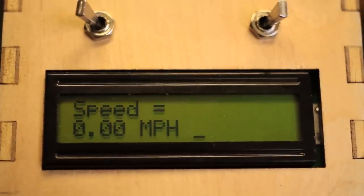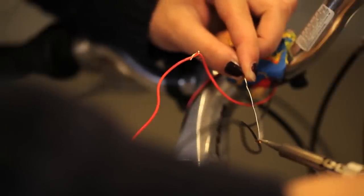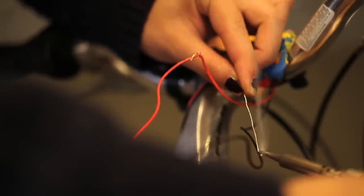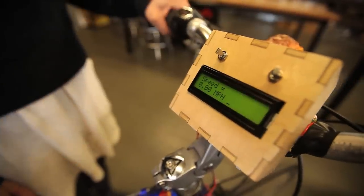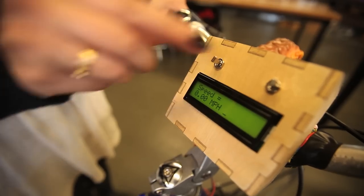This bike speedometer has two switches on it. One of them turns the speedometer off and on, and the other one turns a backlight off and on, so that's really useful if you're biking at night.